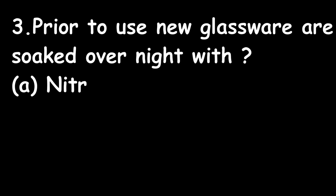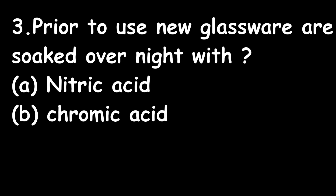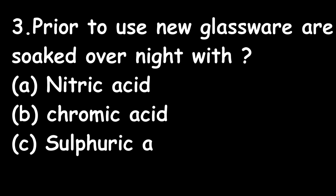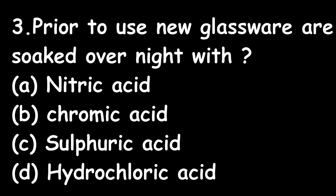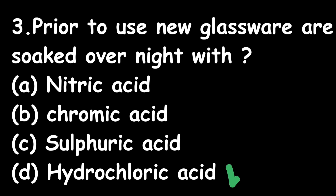Question 3: Prior to use, new glassware is soaked overnight with: Option A: nitric acid; Option B: chromic acid; Option C: sulfuric acid; Option D: hydrochloric acid. The right answer is Option D — hydrochloric acid (HCl). New glassware is soaked overnight with hydrochloric acid.